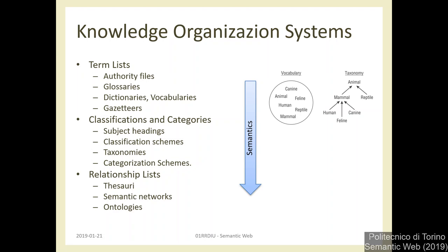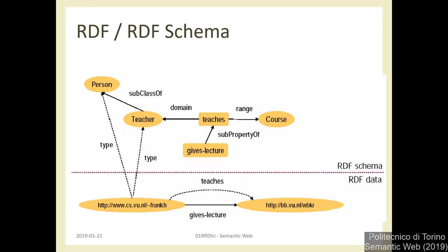Ontologies are powerful tools with powerful reasoners and editors, but they require a lot of structural design and upfront investment, and they are not so easy to integrate with other sources. Maybe something lighter is sufficient — for example, a taxonomy may be enough, and there are RDF Schema vocabularies for describing taxonomies. We don't need to move to a full ontology approach if that's all we need.